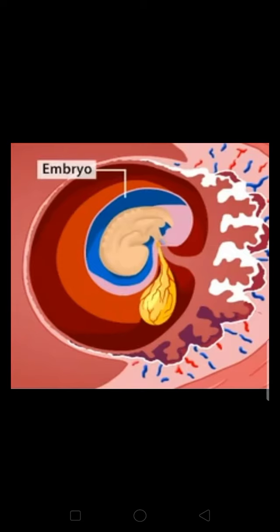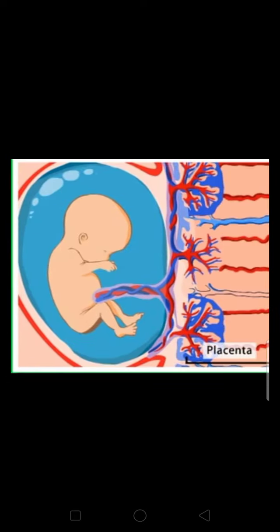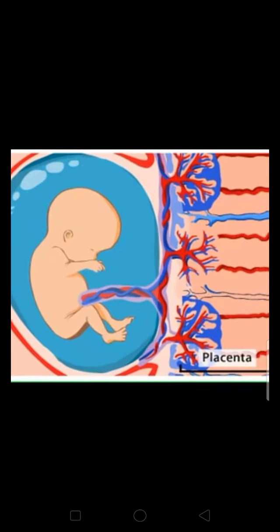It gradually develops the different parts of the body such as the head, eyes, and legs. When the embryo reaches the stage where all the body parts can be identified, it is called a fetus.